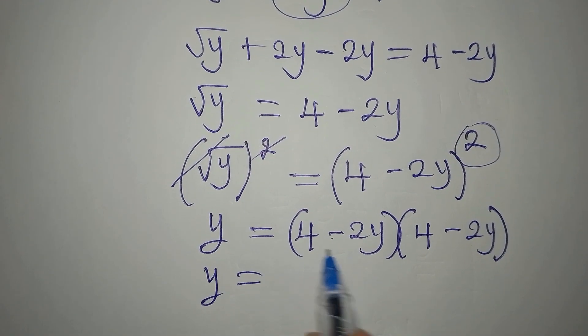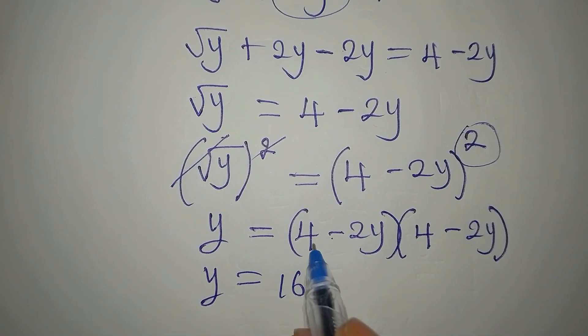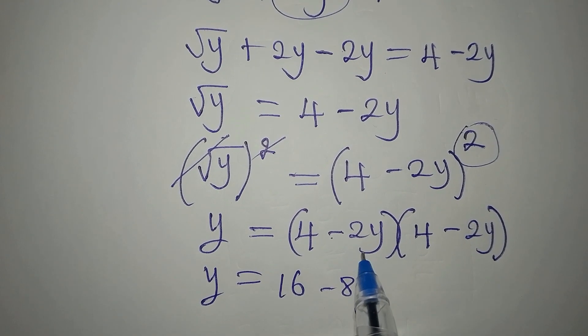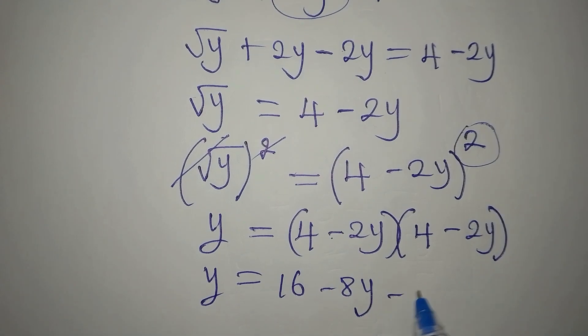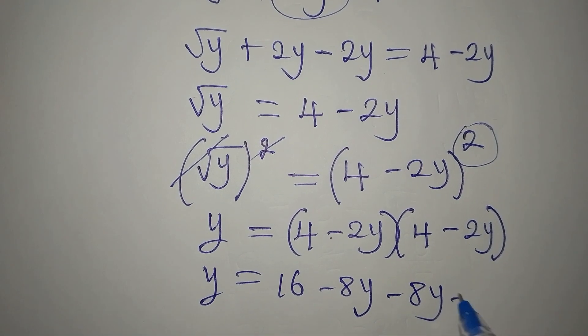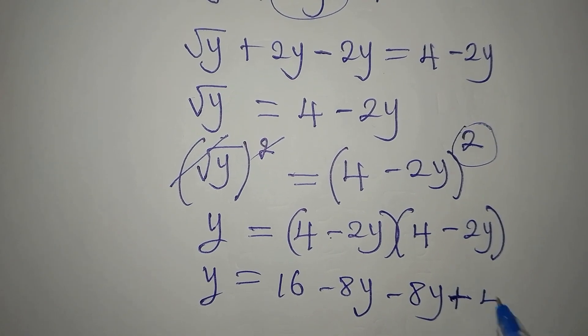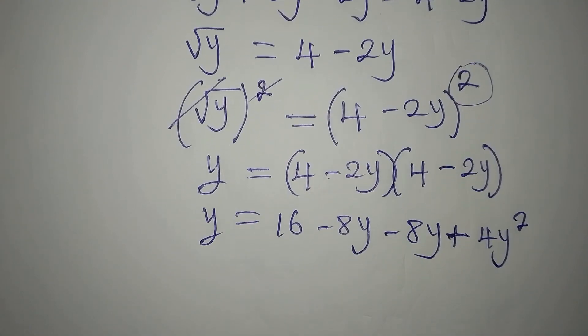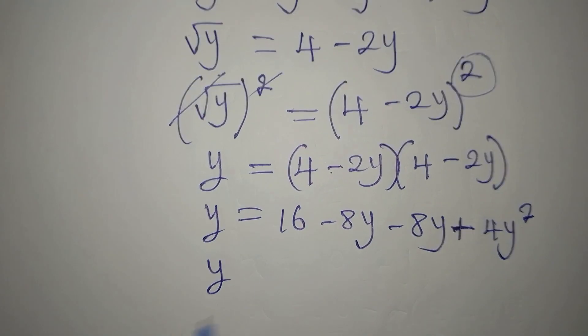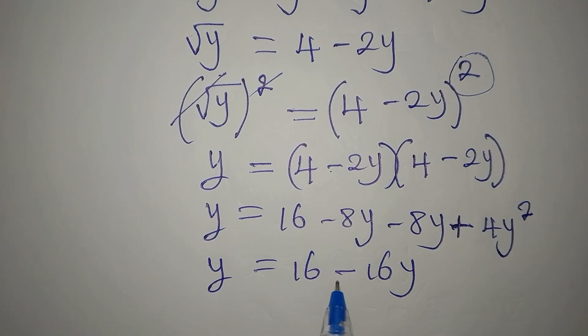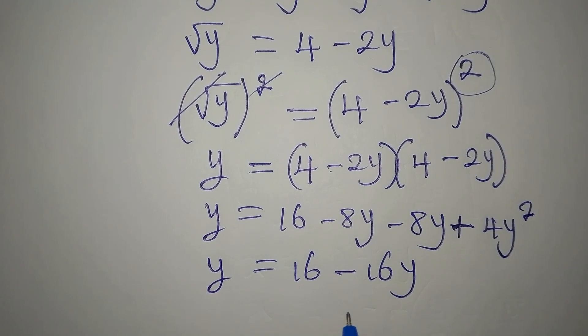Now y is 4 times 4 is 16, 4 times minus 2y is minus 8y, minus 2y times 4 that would be minus 8y, minus 2y times minus 2y that would be plus 4y squared.